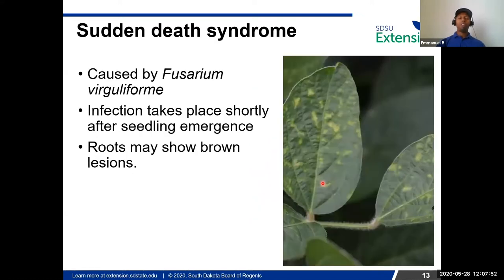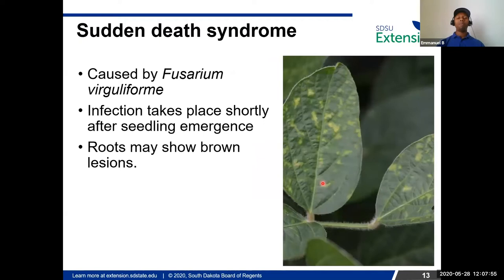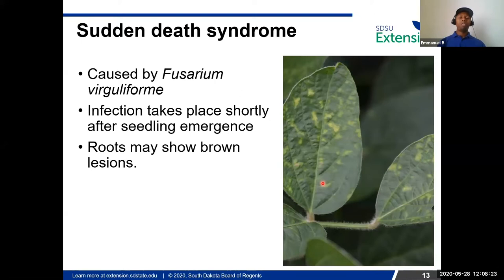Another disease caused by Fusarium is sudden death syndrome. This disease is seen later in the growing season, but infection actually happens right after seedling emergence in soybeans. Where there's excessive moisture and the planted variety is susceptible, sudden death syndrome can develop. The pathogen infects soybean plants right after emergence and the symptoms show up much later in the season — that's something we need to be aware of.